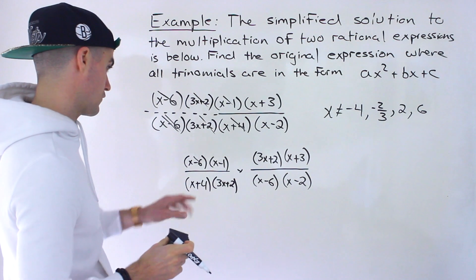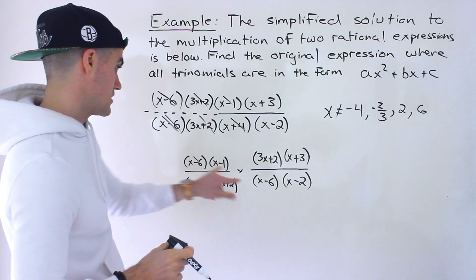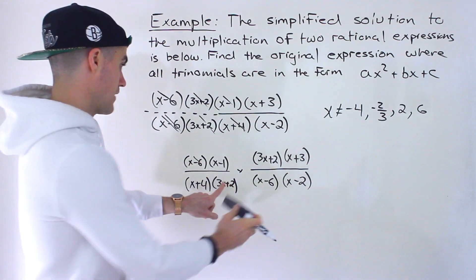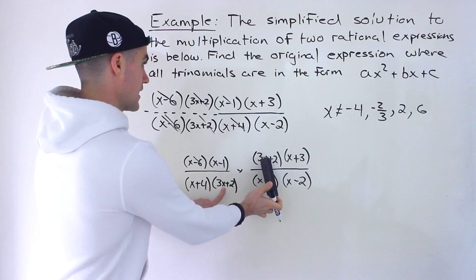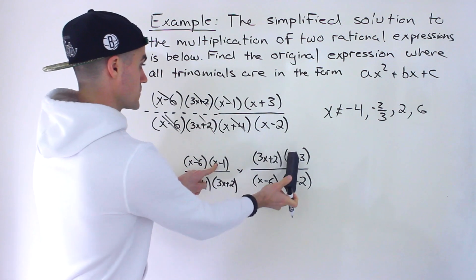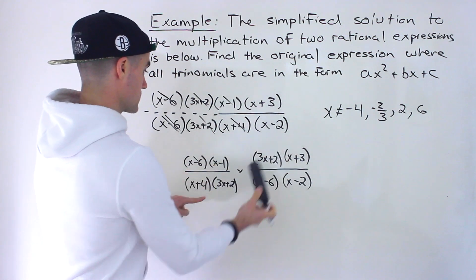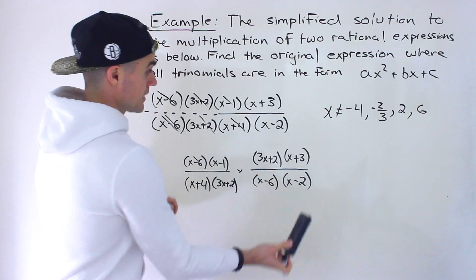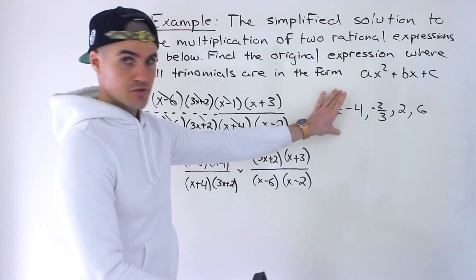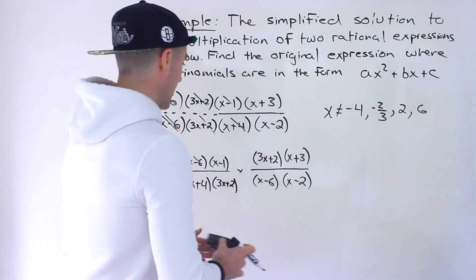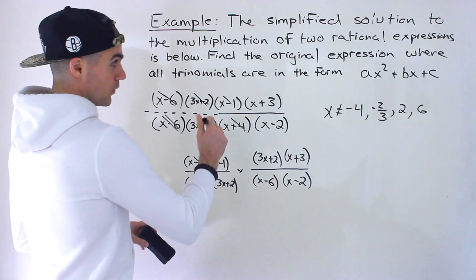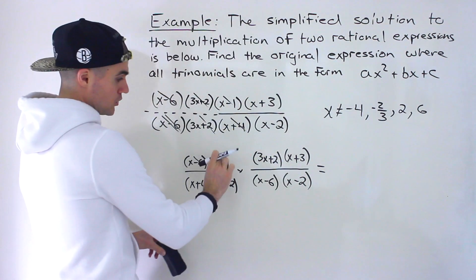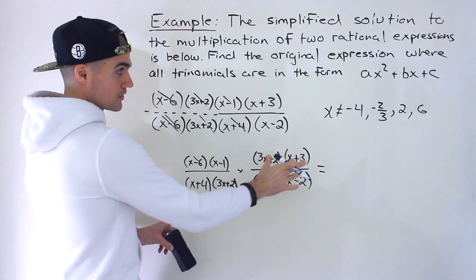Let's confirm: the 3x plus 2 factors cancel out and the x minus 6 factors cancel out, leaving us with x minus 1 times x plus 3 over x plus 4 times x minus 2 — and those produce the correct restrictions. Now, they said we can't leave the trinomials factored — they all have to be in expanded standard form.